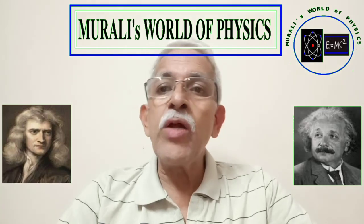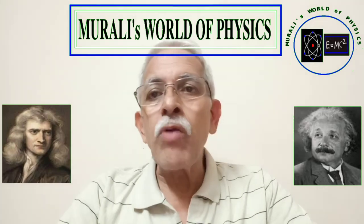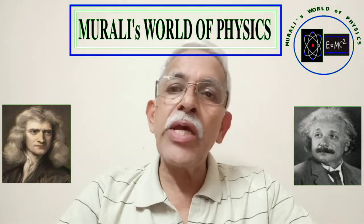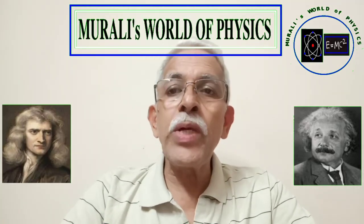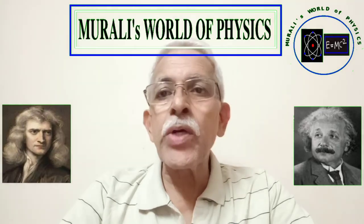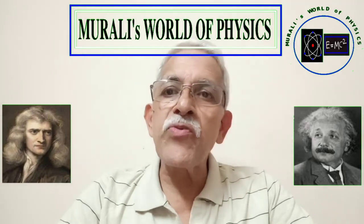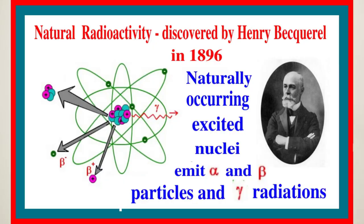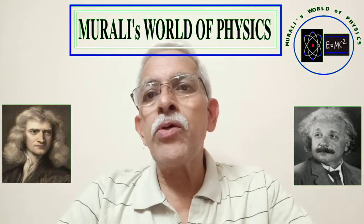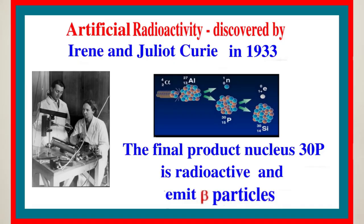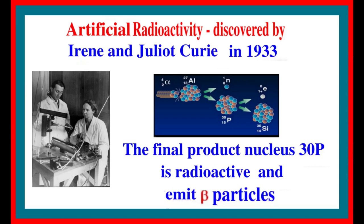Experimental investigations in the field of nuclear physics often involve detailed studies on the radiations or particles which are emitted from excited nuclei. These excited nuclei can be either naturally occurring or may be artificially produced. The first type of process is called natural radioactivity and was discovered by Henry Becquerel in the year 1896. The second category is called artificial or induced radioactivity and was discovered by Irene Angelio Curie in the year 1933.